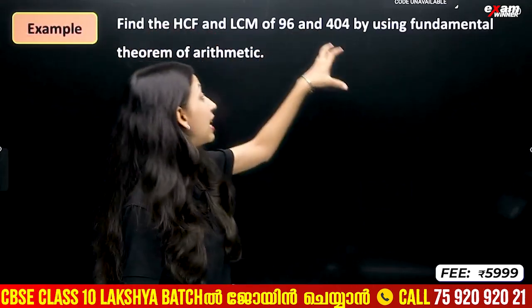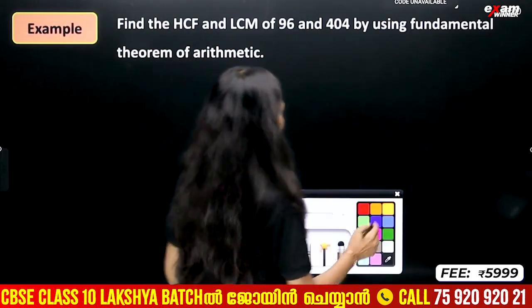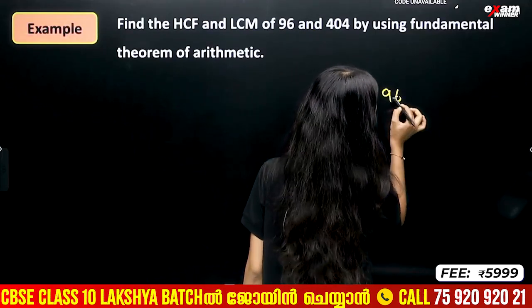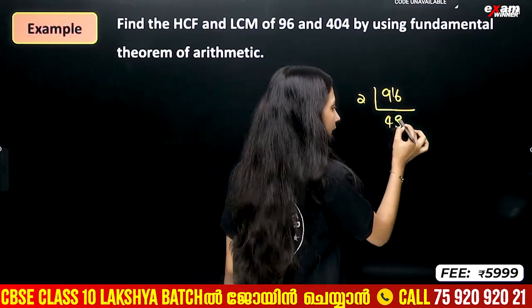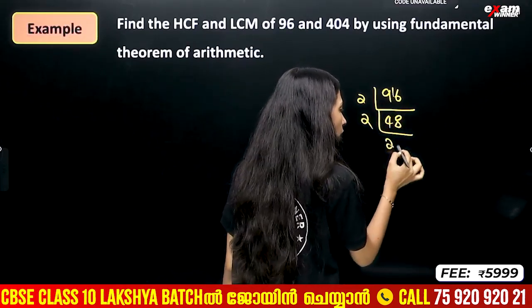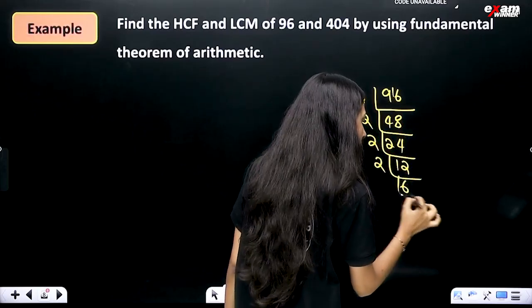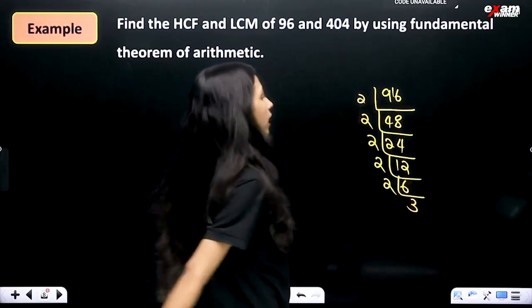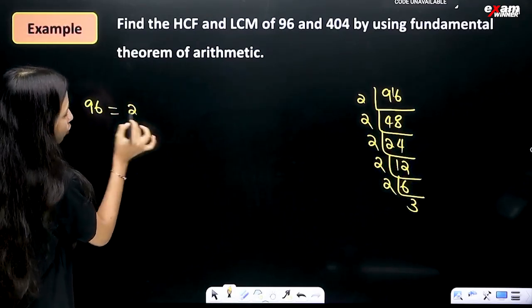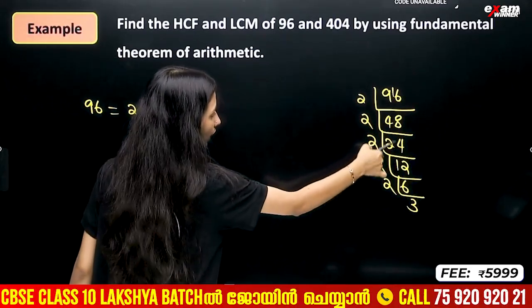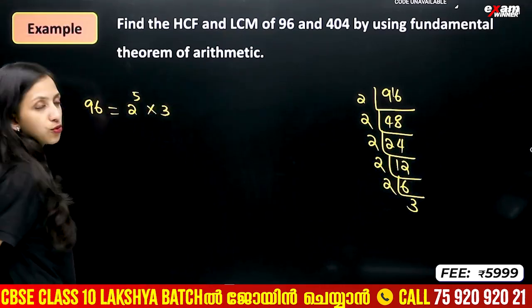Second example: Find HCF and LCM of 96 and 404. We factorize 96: dividing by 2 repeatedly gives us 2 raised to 5 into 3.